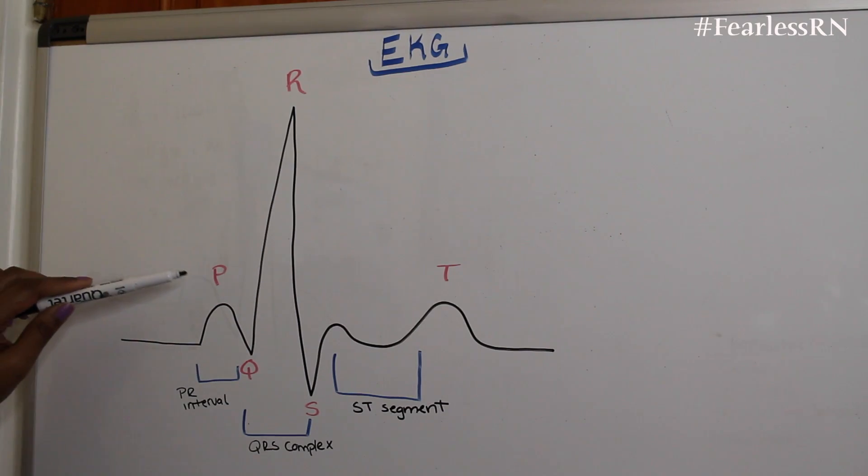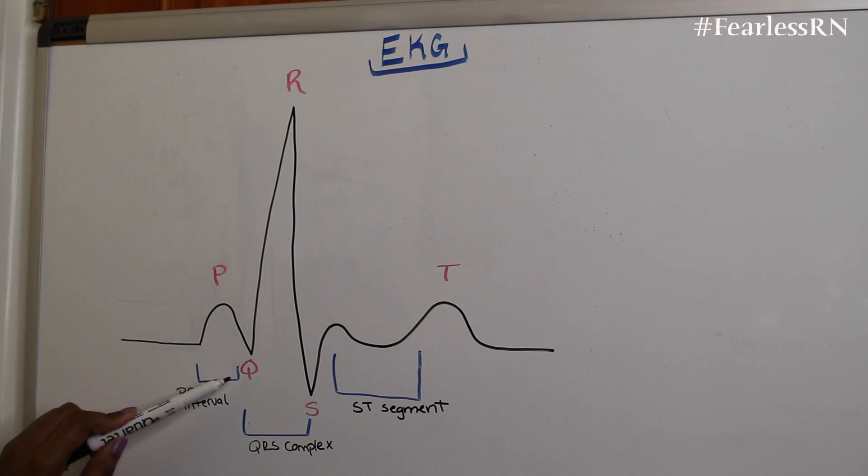So this is the P wave, and then you have the PR interval, you have the Q, RS complex, the ST segment, and the T wave. So now let's go over what each component means.